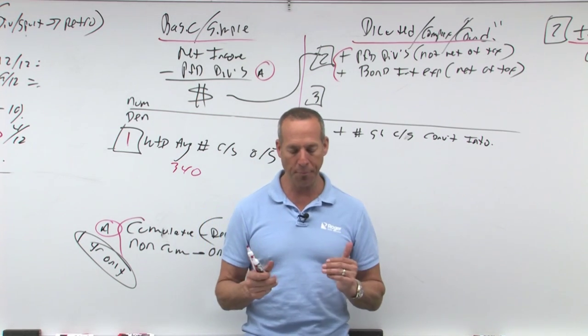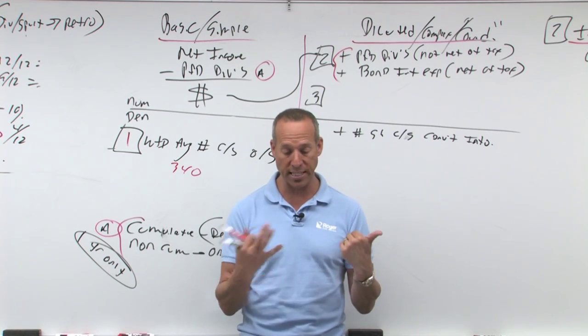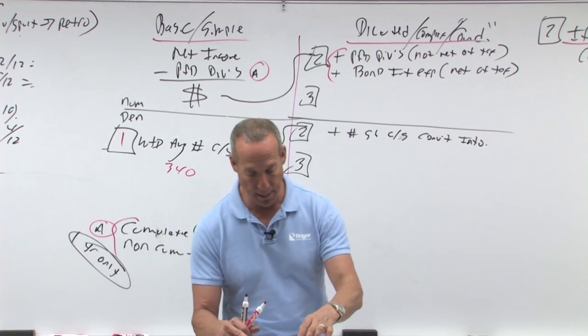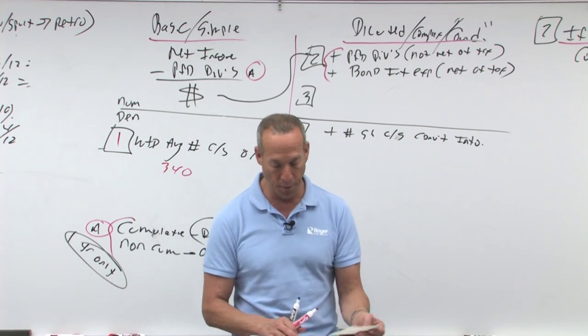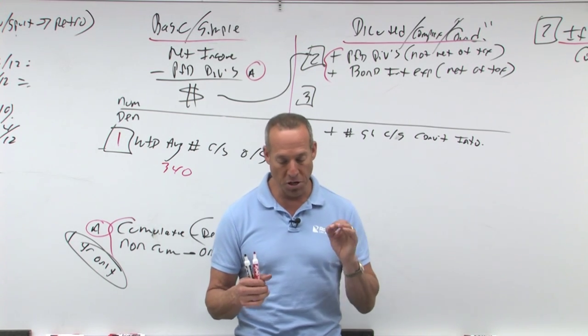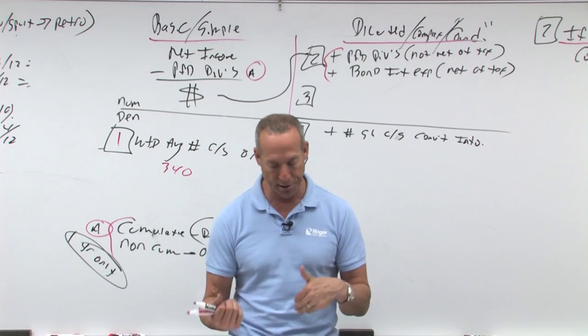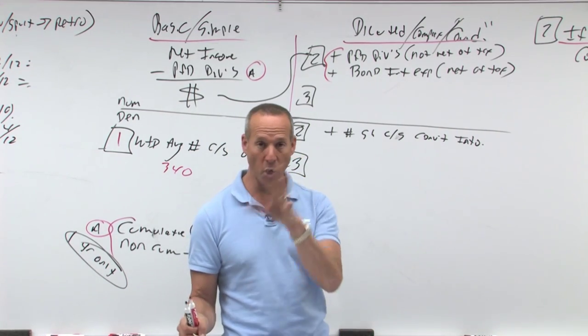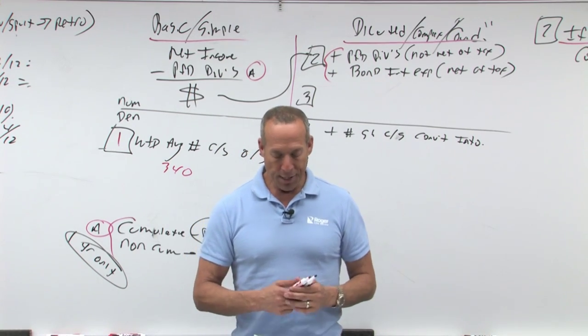So you'll see here, net income, and now I'm making the adjustment for number two: preferred dividends not net of tax, or interest expense saved net of tax. So those numbers are included there. And then the denominator, the bottom, that would be the number of shares convertible securities converted into for both preferred and convertible, not weighted. So we're not weighting them, don't average them out, that would be for the whole year.